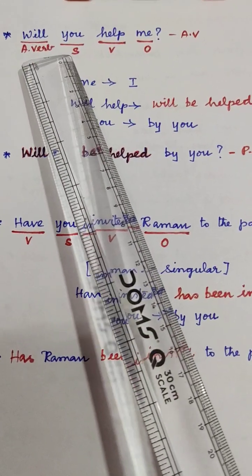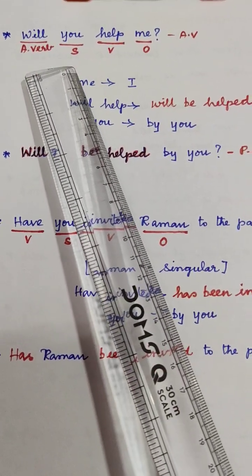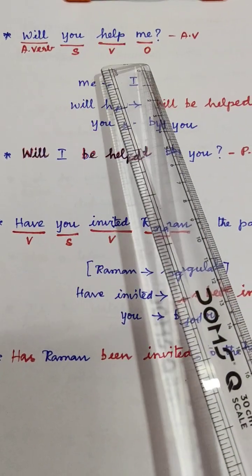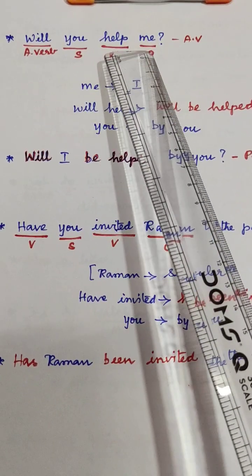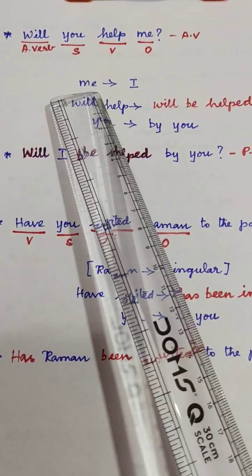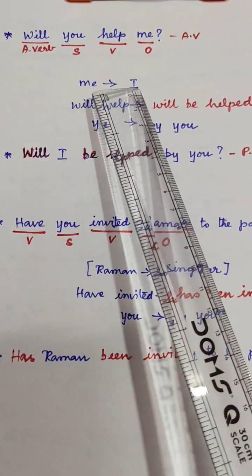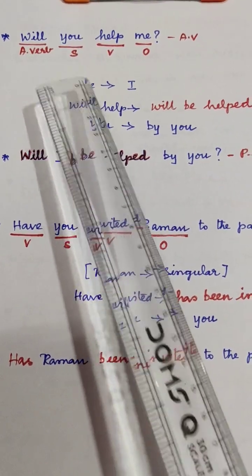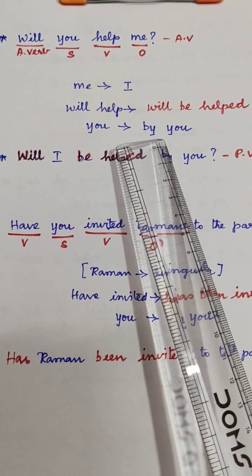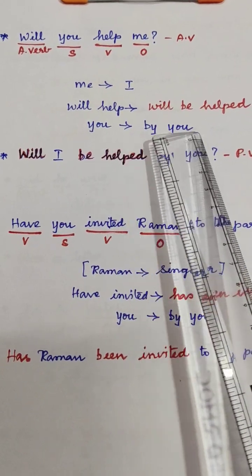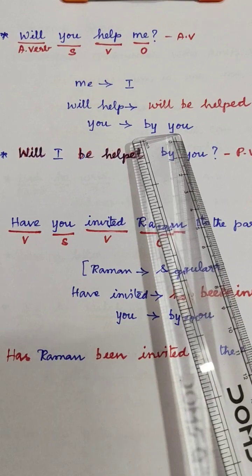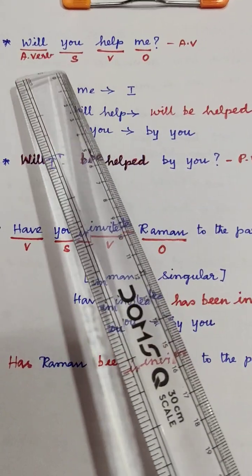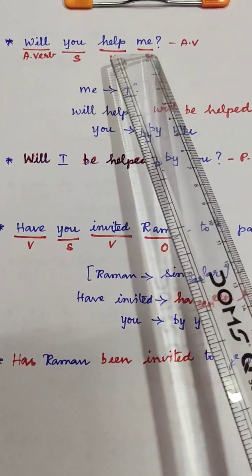'You' is the subject, 'me' is the object. 'Me' becomes 'I' as the new subject. 'You' changes to 'by you'. So: 'Will you help me?' active voice becomes 'Will I be helped by you?'